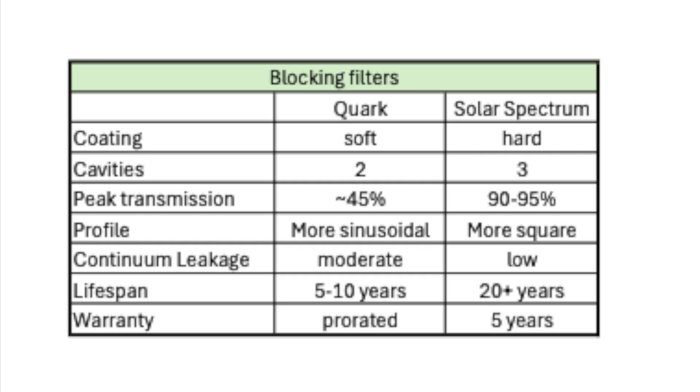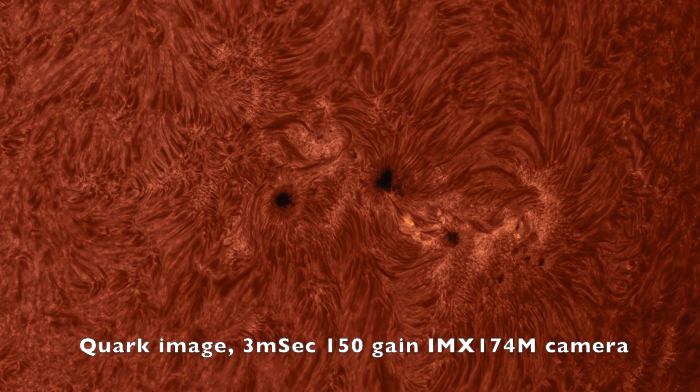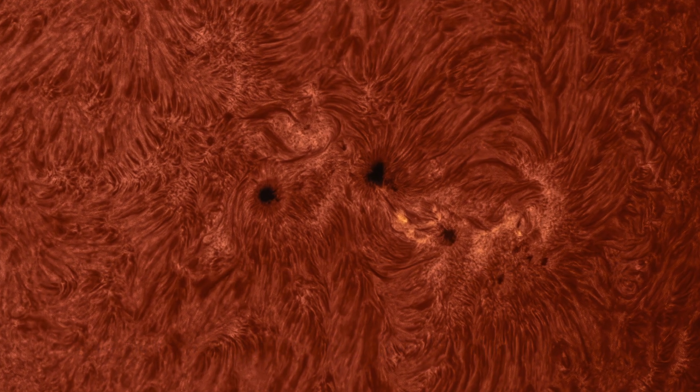Now let's talk about blocking filters. The Daystar Quark design is a soft-coated, two-cavity filter, has about 45% peak transmission, more of a sinusoidal profile, has more continuum leakage, is more sensitive to humidity and aging, has a typical lifespan of five to ten years, and the blocking filter is excluded from the warranty.